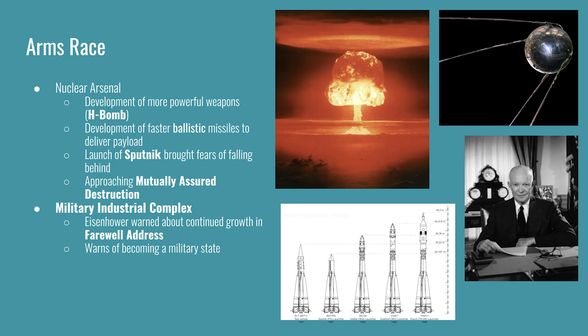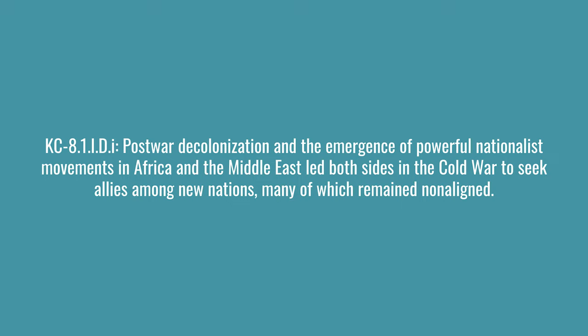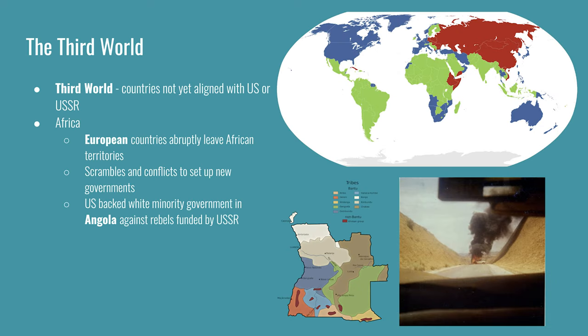It's a little too convenient that Eisenhower warns the US could become a military state as he leaves the Oval Office — it's a lot harder to prevent the growing military-industrial complex when US foreign policy treated the Soviet Union and communism as an existential threat. The next key concept covers countries that had not yet joined either the US or Soviet alliance system. Post-war decolonization and the emergence of powerful nationalist movements in Africa and the Middle East led both sides in the Cold War to seek allies among new nations, many of which remained non-aligned. The term 'third world' often gets misused to describe a less-developed country; in reality, it originated during the Cold War to refer to countries not aligned with the United States or the Soviet Union.